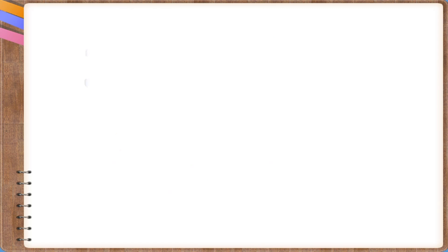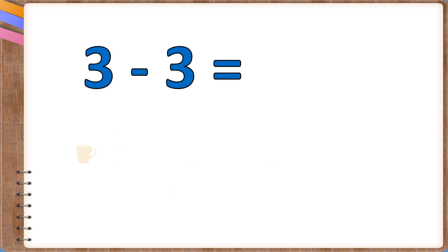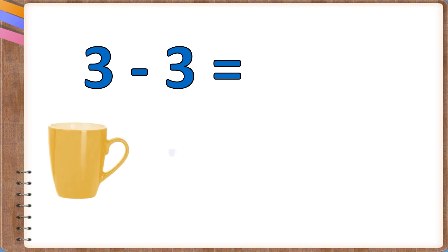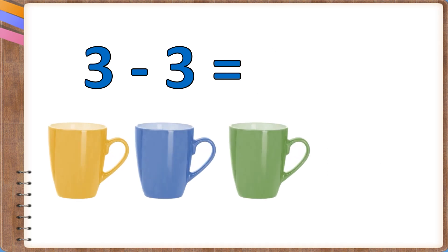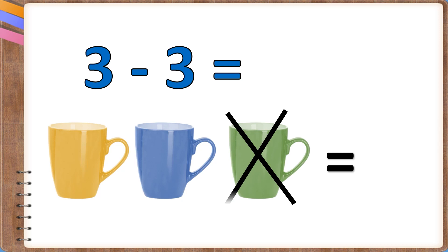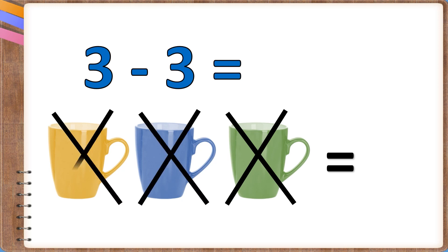3 minus 3. There were three cups. You removed all of them. Now there is no cup.